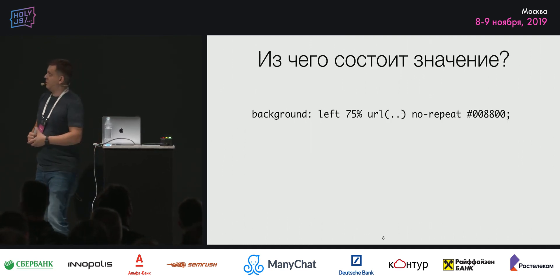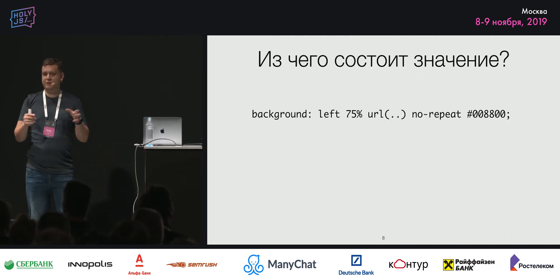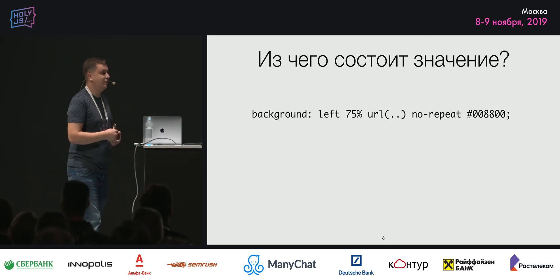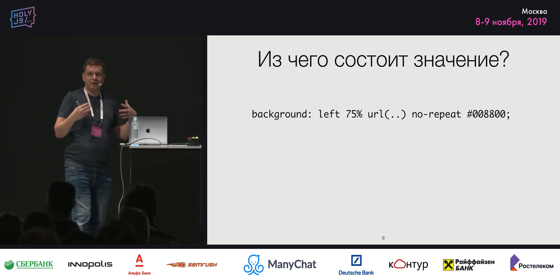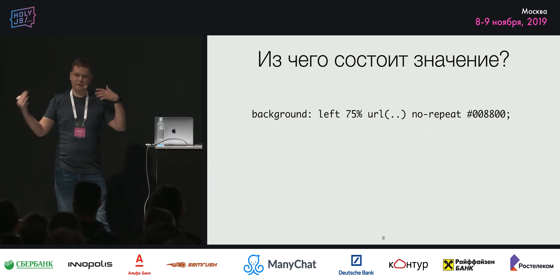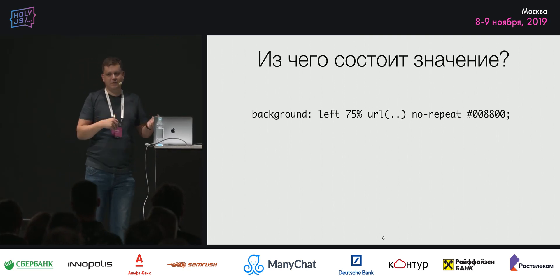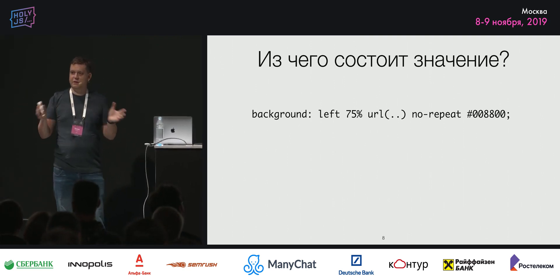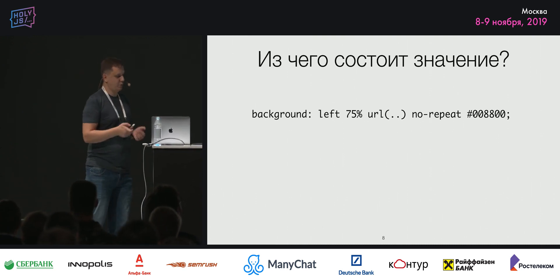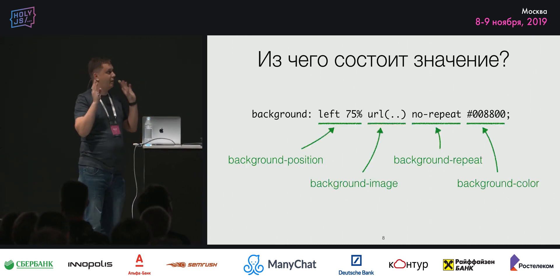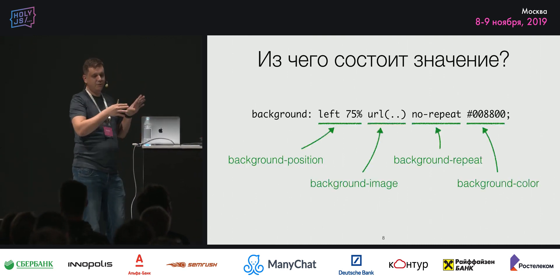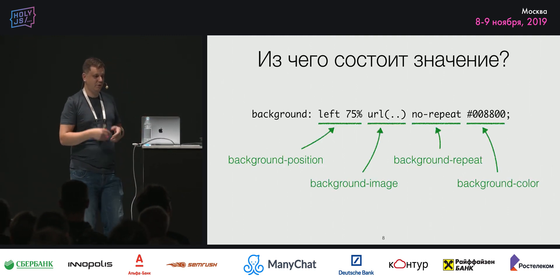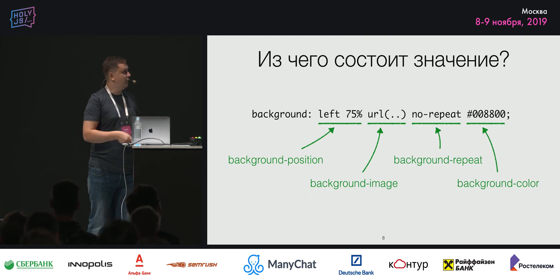Вот ещё один пример — background. Это shorthand-свойство, там есть множество разных компонент: position, повторение и всякая такая история. Примерно такая картинка должна быть: первые два элемента — это position, потом идёт image, потом repeat, потом color.